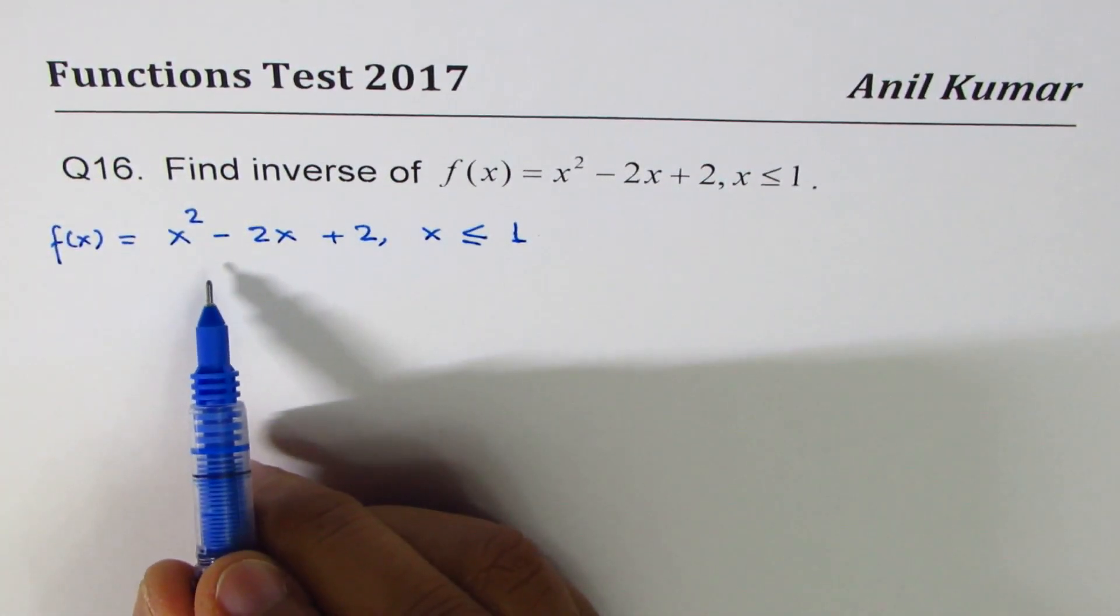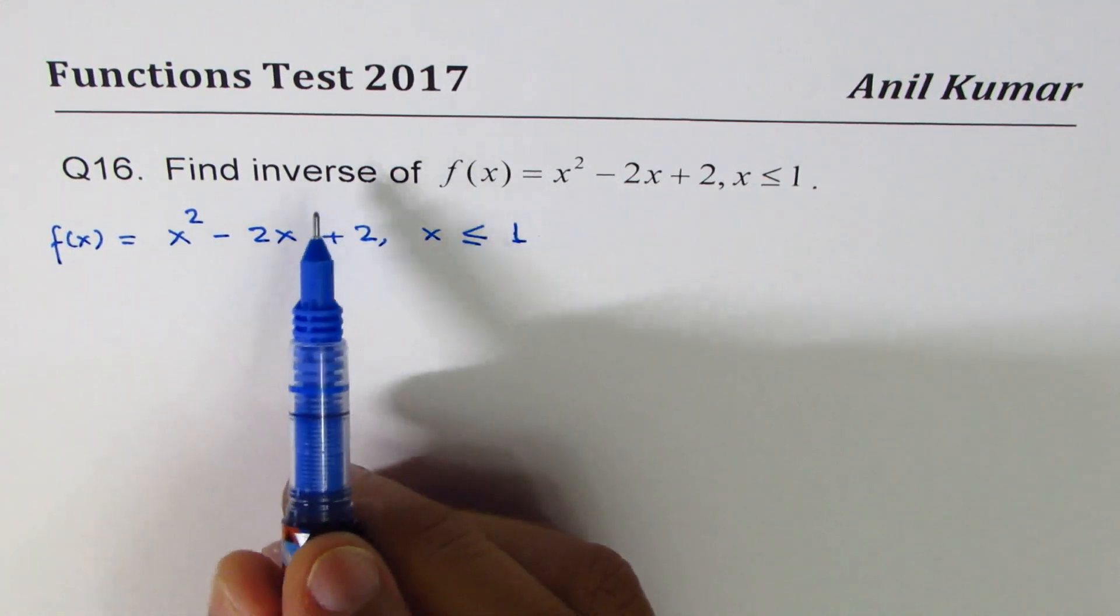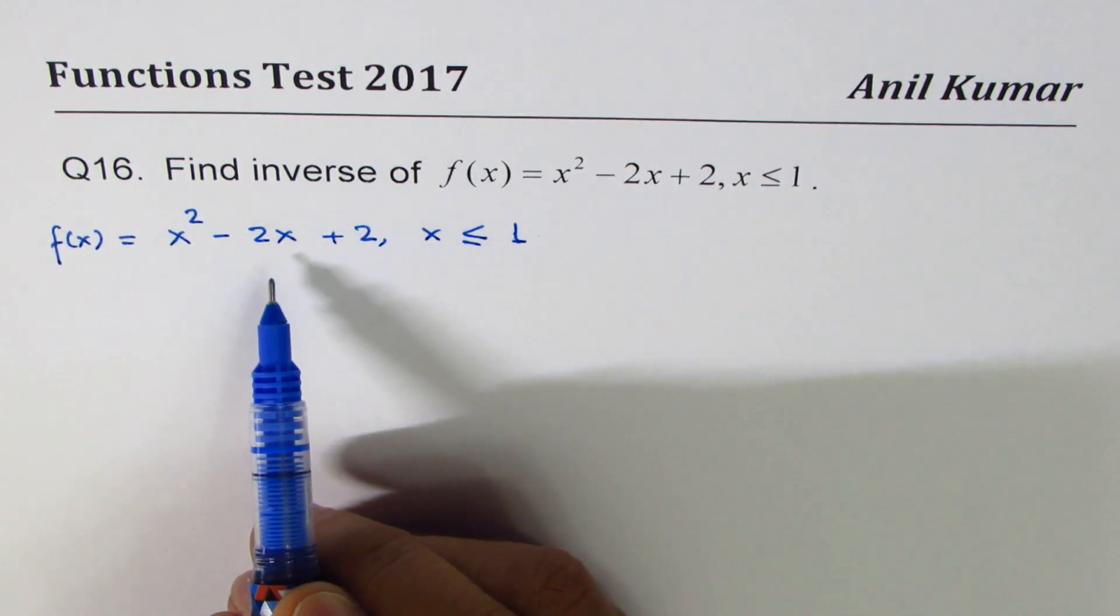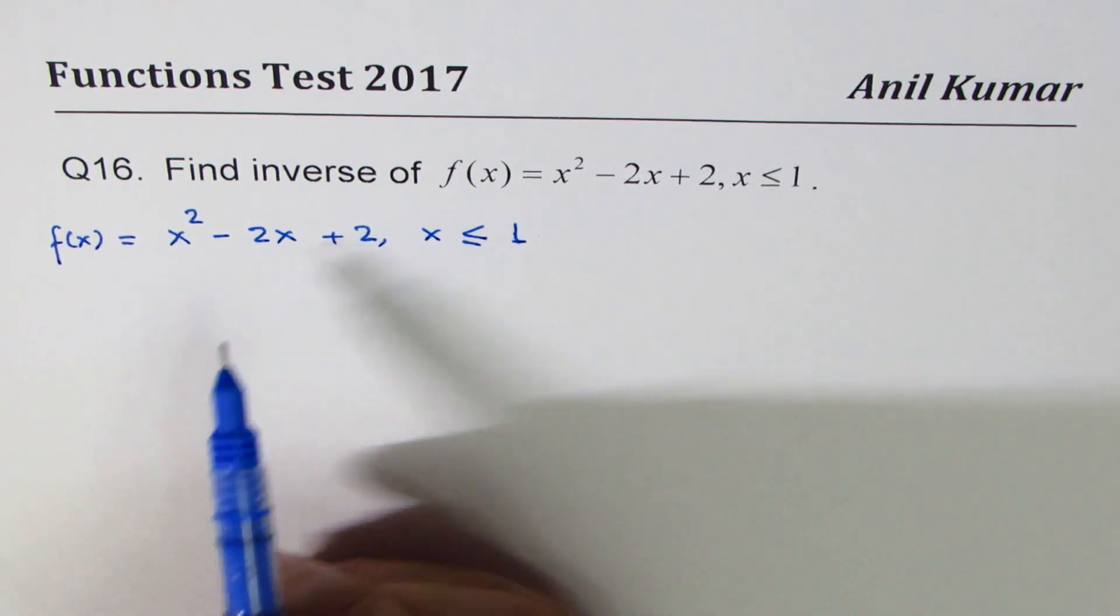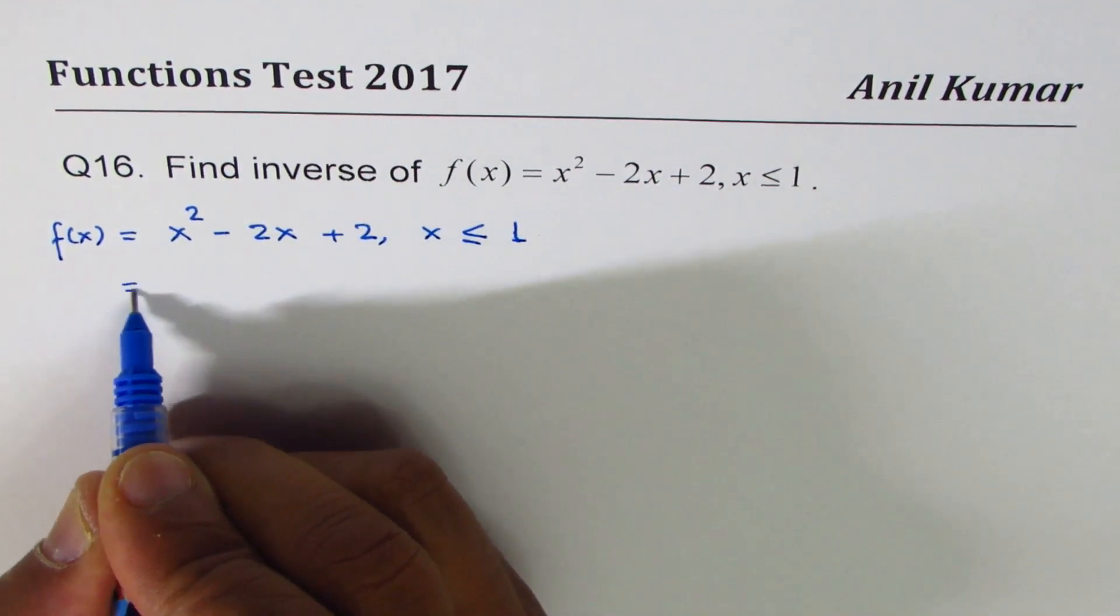To find the inverse, it is necessary to complete the square and write it in vertex form. Let's change the form first.